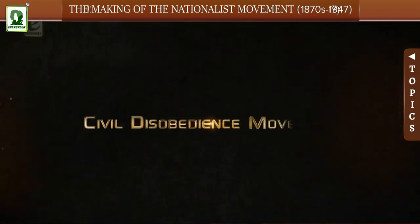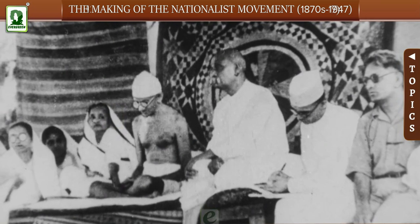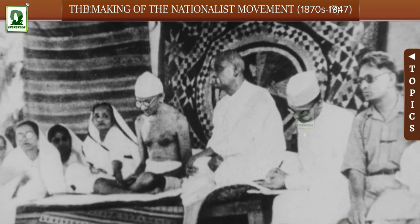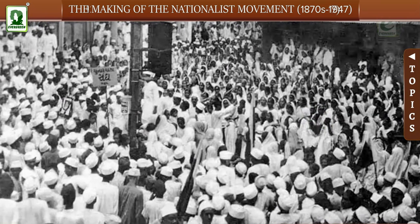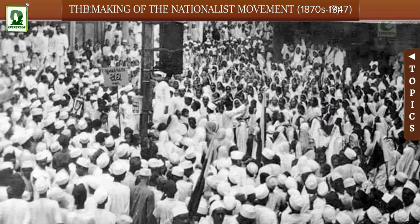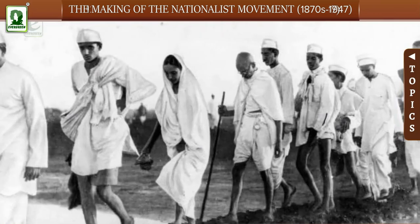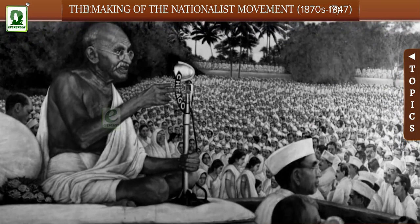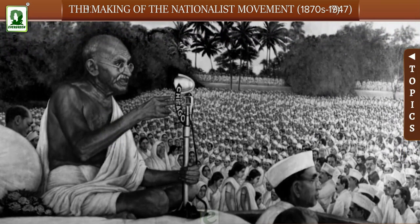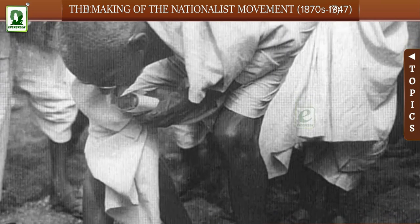Civil Disobedience Movement: In 1930, the Congress launched another mass movement called the Civil Disobedience Movement under the leadership of Gandhi. As a symbol of disobedience, it was decided to break the unjust salt law non-violently by defying the Salt Act. The movement started with the Dandi March. Gandhi started from Sabarmati Ashram with 79 followers on a 240-mile march to the coastal town of Dandi, Gujarat, on the Arabian Sea, and made salt from the seawater.